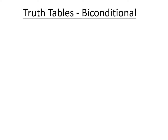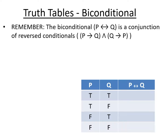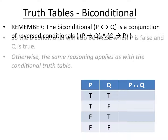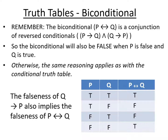The last function we need to look at is the biconditional. The biconditional is a conjunction of reversed conditionals, meaning the final output is just a two-way conditional relationship. The conditional is false only when P is true and Q is false, but the biconditional is also false when Q is true and P is false — because we have that same conditional relationship going from Q to P as we do from P to Q.